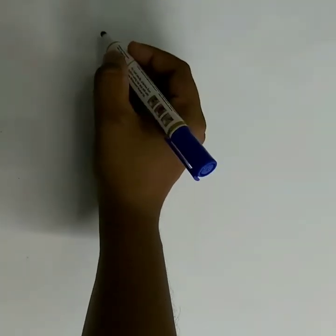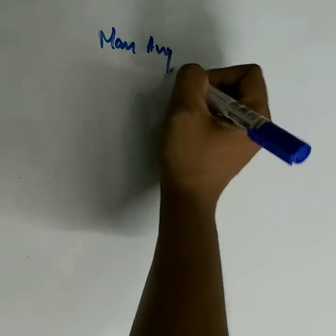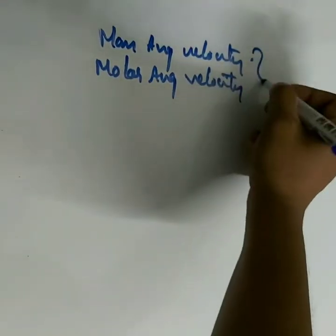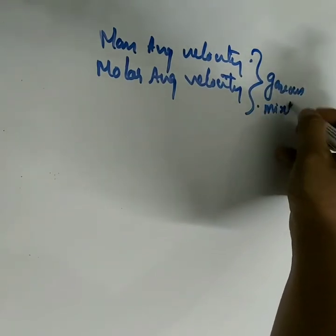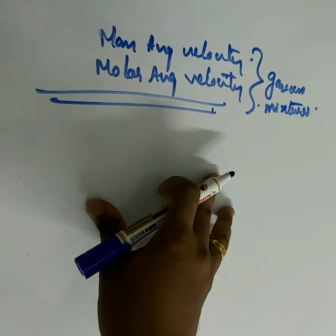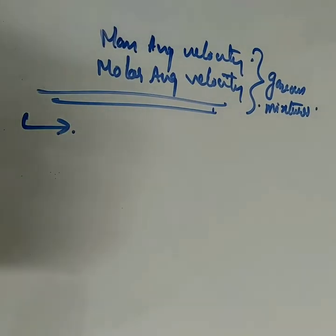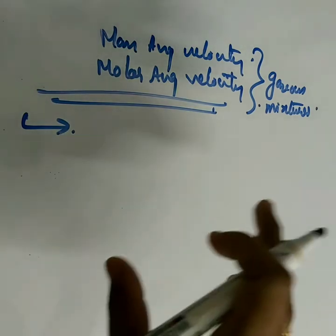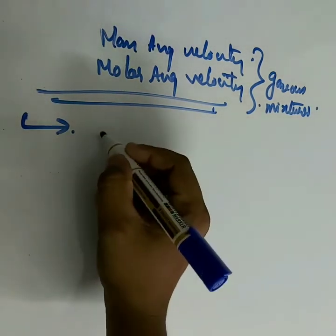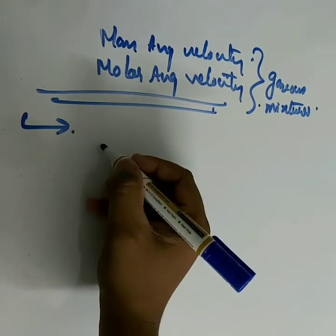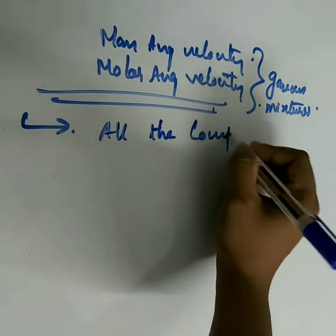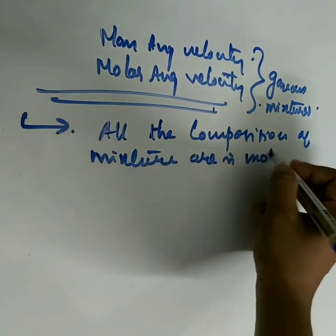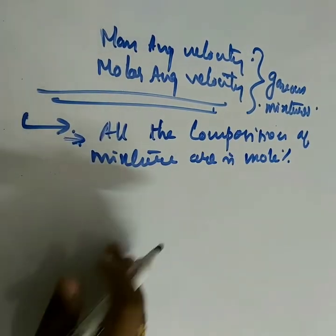They are asking us to find the mass average velocity and the molar average velocity of this gaseous mixture. Once you get a problem like this, you first write down all the known parameters given in the problem. The composition of the mixture is given in mole percentage.